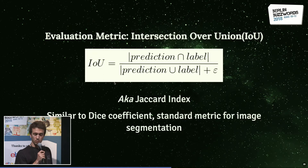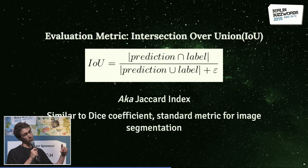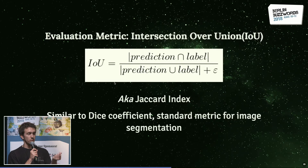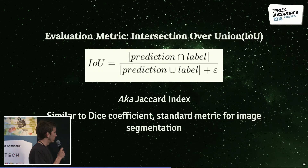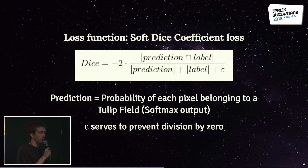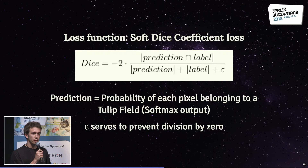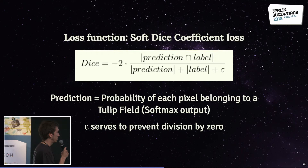For the evaluation metric, we used intersection over union — probably the most used metric for segmentation tasks. It's the ratio between the intersection of predicted tulip fields and ground truth, over their union. It's also called the Jaccard index, and is similar to the dice coefficient, which we use as our loss function. We use the soft dice coefficient loss, which measures something closer to average performance across the dataset rather than worst-case performance.